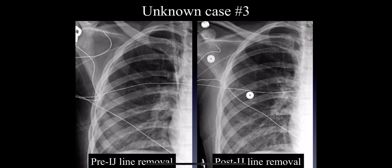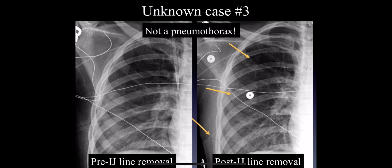Foreign bodies: really force yourself to look for those because they're really easy to miss. Unknown case number three — patient has two X-rays, both before and after internal jugular line removal. The patient developed some shortness of breath right after, the clinical team was concerned and was all ready to put in a chest tube. What you notice is that it kind of looks like a pneumothorax, but if you continue that line inferiorly, it actually extends outside the chest. So this is just a fake-out, something overlying the patient. This is not a pneumothorax — we should not put in a chest tube.